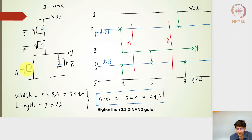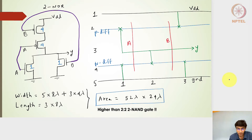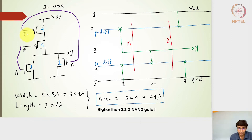Now I need to draw this in the stick diagram. I have the polysilicon gate, where A and A are the same, and B and B are the same. We'll have the P diffusion lines and the N diffusion lines, the VDD rail and the ground rail. The polysilicon gates A and B will cut across the P diffusion and N diffusion lines, forming the P transistors and N transistors for inputs A and B on the P and N diffusion sides respectively.